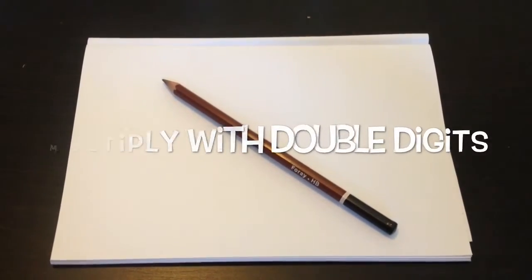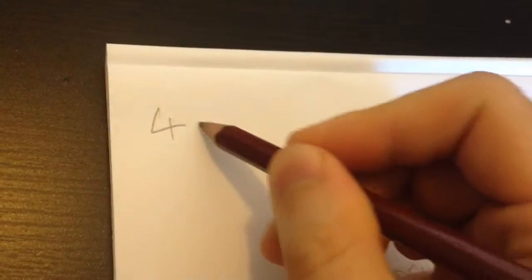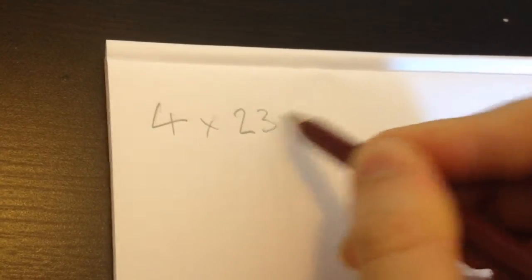Most of us learn our timetables up to 10, so when we see a sum like 4 times 23, well, we get a bit worried. But don't panic! There are two easy ways you can do this.